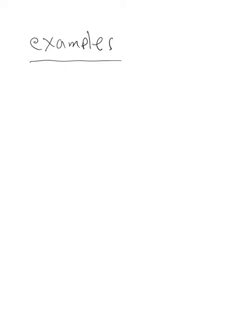Let's look at some examples to get an idea of where we need to go. We're trying to come up with a formula that gives us all primitive Pythagorean triples. For example, 3, 4, 5: rearranging the equation gives 3² = 5² - 4². Using difference of squares, 5² - 4² = (5-4)(5+4) = 1 × 9. So 3² = 1 × 9, which is a true statement.